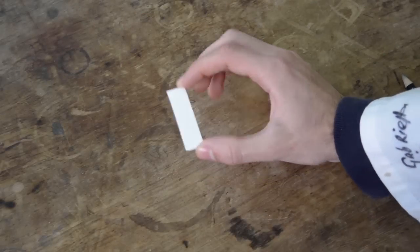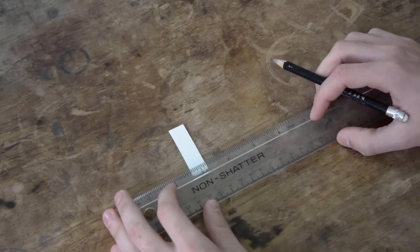Cut the TLC plate down to an appropriate size. Around 6 cm by 2.5 cm should be sufficient.